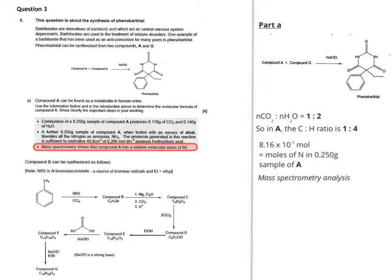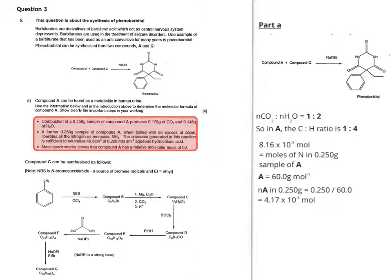The next piece of information is a little snippet from the mass spectral analysis and it says that compound A has a relative molecular mass of 60. All the information in the box tells us those three things. Now we can work out the number of moles of compound A in our 0.250 grams sample.